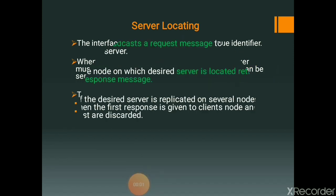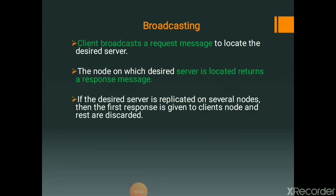The first method is broadcasting. The client broadcasts a request message to locate the desired server. The node on which the desired server is located returns a response message. If the desired server is replicated on several nodes, then the first response is given to the client node and the rest are discarded. The broadcasting method is easy to implement and is suitable for use on small networks. However, the method is expensive for large networks because of increased message traffic due to the involvement of all nodes in broadcast processing.